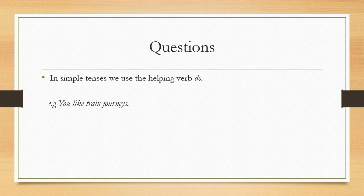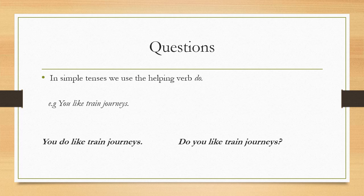But there are some sentences where we don't find helping verbs, for example in the simple tenses. In the simple tenses, we generally form questions by using the helping verb DO. For example, you like train journeys — the helping verb DO is implied in this sentence, which actually means you do like train journeys. So in order to make a question of this simple present tense sentence, we use that implied helping verb DO to form the question: do you like train journeys?